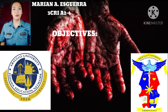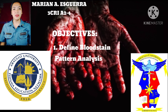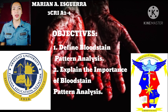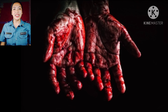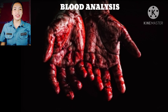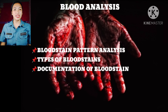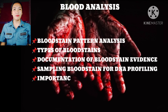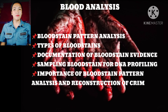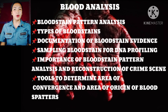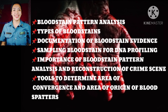The objectives I should meet are: define bloodstain pattern analysis and explain the importance of bloodstain pattern analysis. This is all about blood analysis. It includes the bloodstain pattern analysis, types of bloodstains, documentation of bloodstain evidence, sampling bloodstain for DNA profiling, importance of bloodstain pattern analysis and reconstruction of crime scene, and tools to determine area of convergence and area of origin of blood spatter.